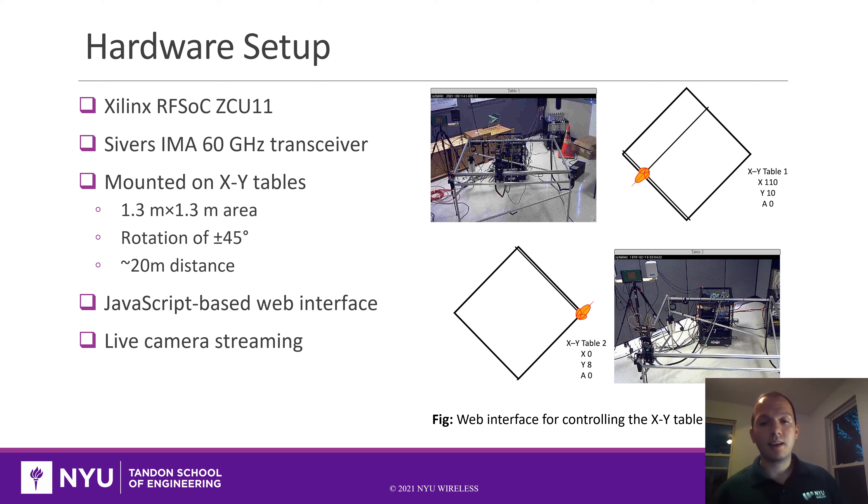The Sivers arrays are mounted on top of XY tables. The XY tables are placed approximately 20 meters apart. The tables enable us to move on the X and Y axis and they also enable rotation around the Z axis. The XY tables can be controlled completely through a web interface and they also provide static images and live camera streaming.